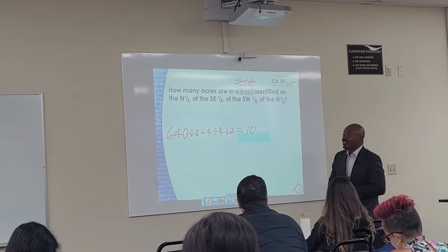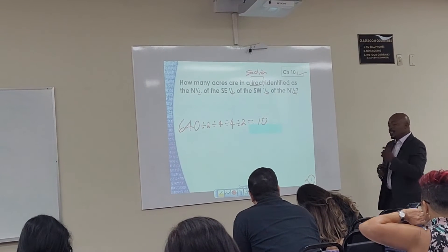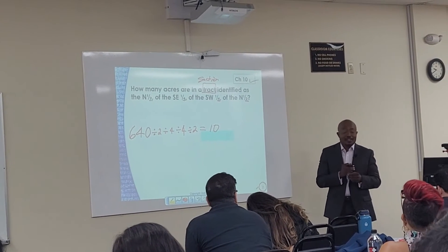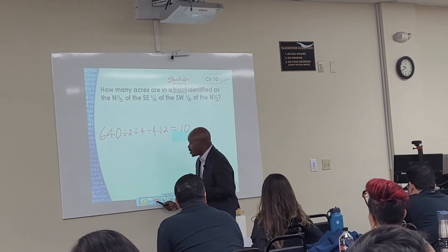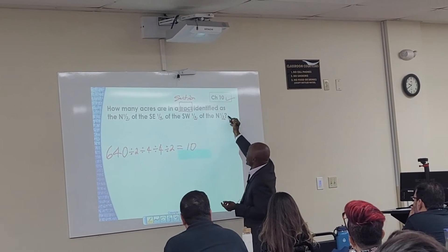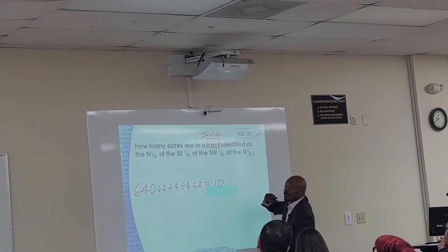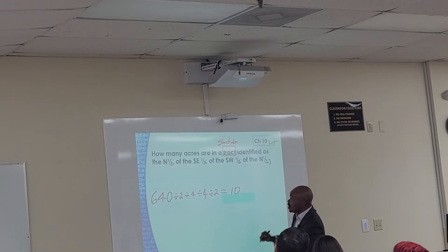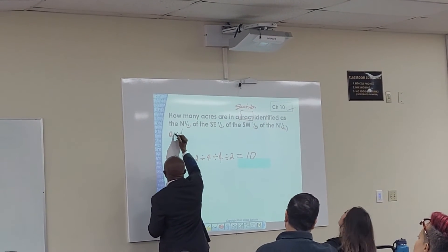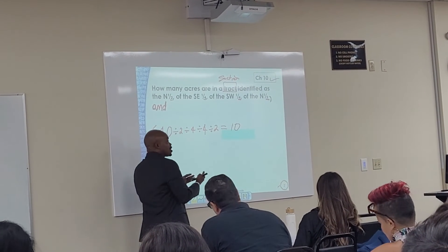I know sometimes it seems so easy that it's too easy to be true. But that is how you do that problem. There is a trick that some test writers will throw in there, and here's how you avoid it. The trick involves the word 'and' — whenever you see the word 'and,' that indicates they are introducing a new section.